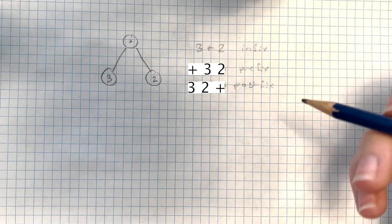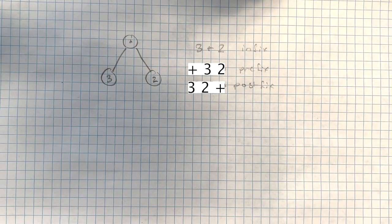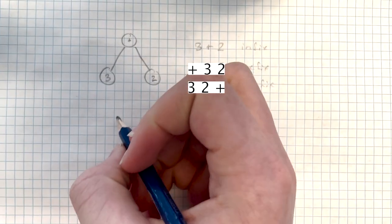Since in postfix, each operator always applies to the two operands before it, and all operators are read left to right, it eliminates the need for brackets to distinguish order of operations. So the way you read postfix is, for example, if you have 2, 6, 4,